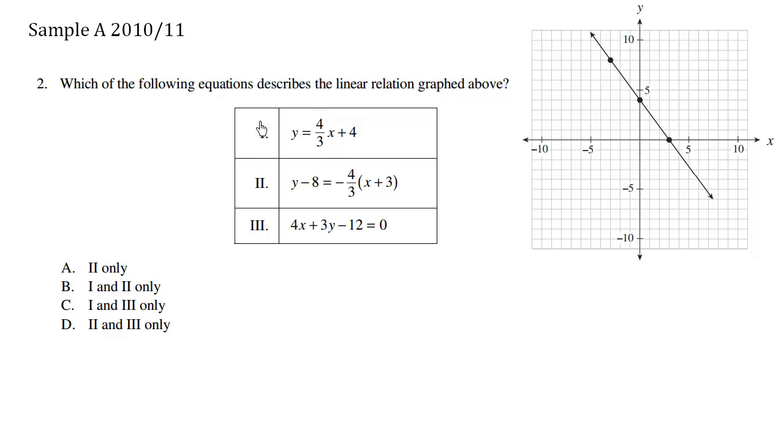Which of the following equations describes the linear relation graphed above? So here's the graph. We can see it has a downhill slope. It has a y-intercept of four.